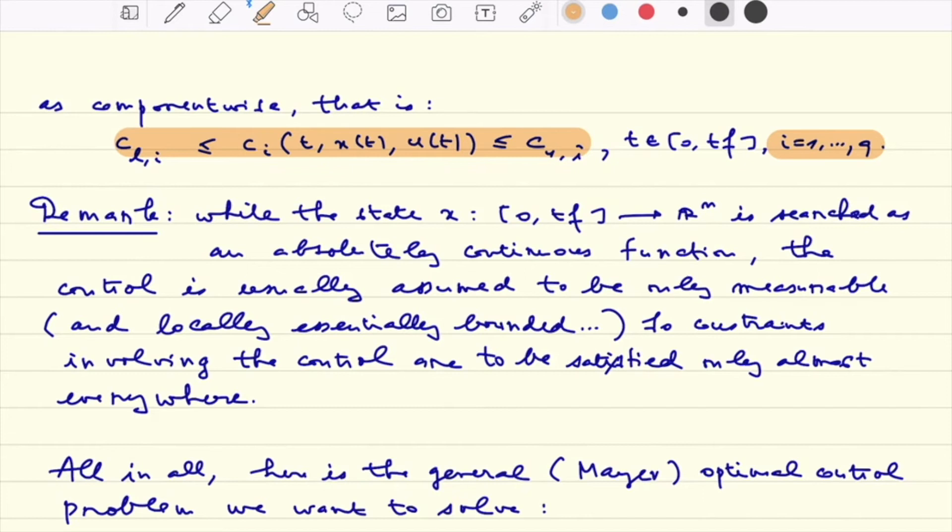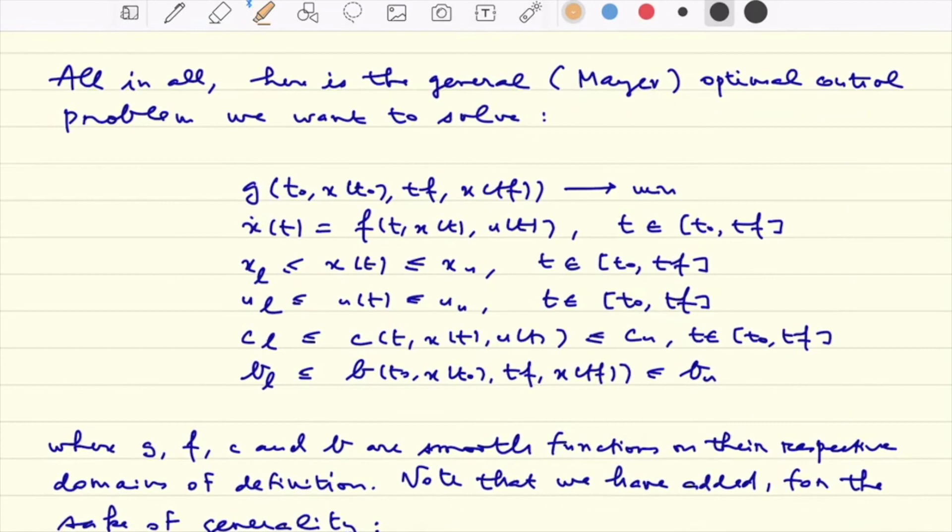A remark on the regularity of the things we look at: clearly the control is a priori only a very general measurable function, in general supposed to be locally essentially bounded, for instance to be able to state the maximum principle of Pontryagin. In accordance with this, the state is supposed to be an absolutely continuous function. That's why clearly the dynamical constraints and any constraint that involves u has to be understood in the almost everywhere sense. This will not be a big issue when we discretize because we will just make some very rough projection of all this stuff into finite dimension, at a collection of some collocation points on the finite grid of points of time.